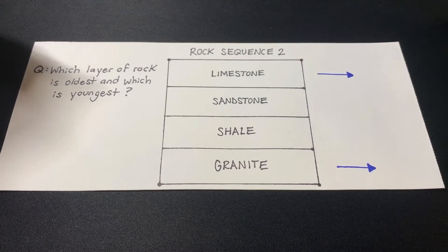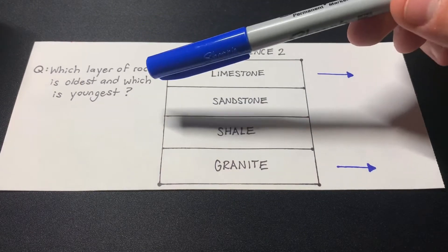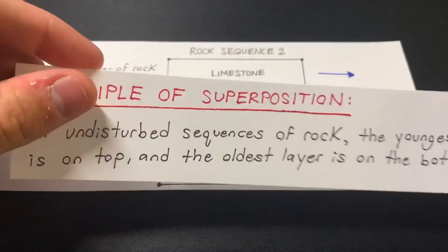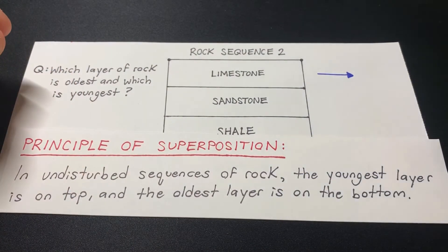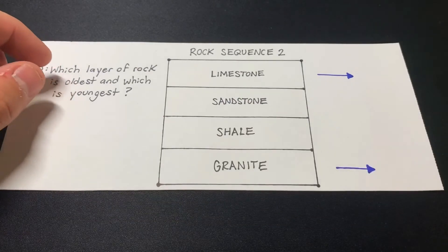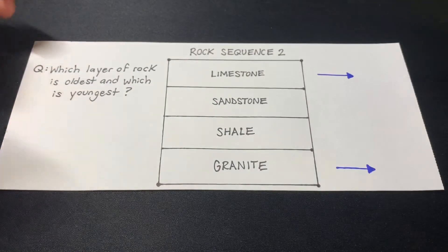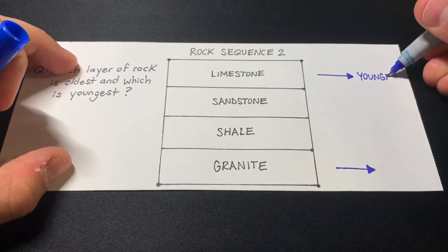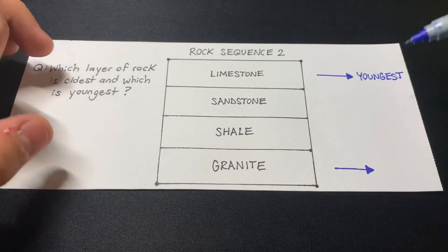This is rock sequence two. The question is: which layer of rock is the oldest and which is the youngest? From the principle of superposition — the youngest layer is on top and the oldest layer is on the bottom — that's all we need to answer this question. The limestone being on the top means it's going to be the youngest, and that means the granite is going to be the oldest.